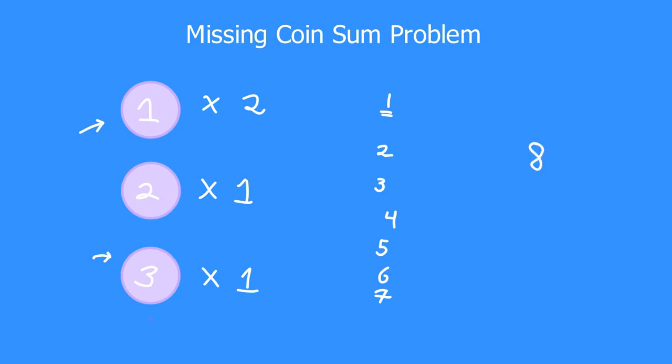Suppose we have another coin of value 20. In that case the answer would still be eight because it is the minimum amount that cannot be paid using these coins. I hope you understood the problem statement. Now let us see how we can solve this problem.